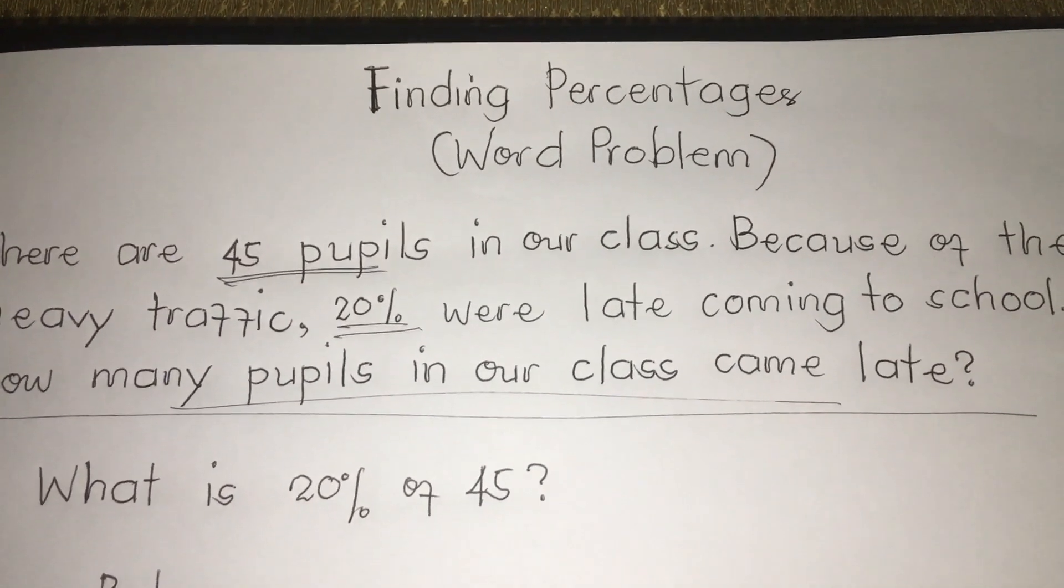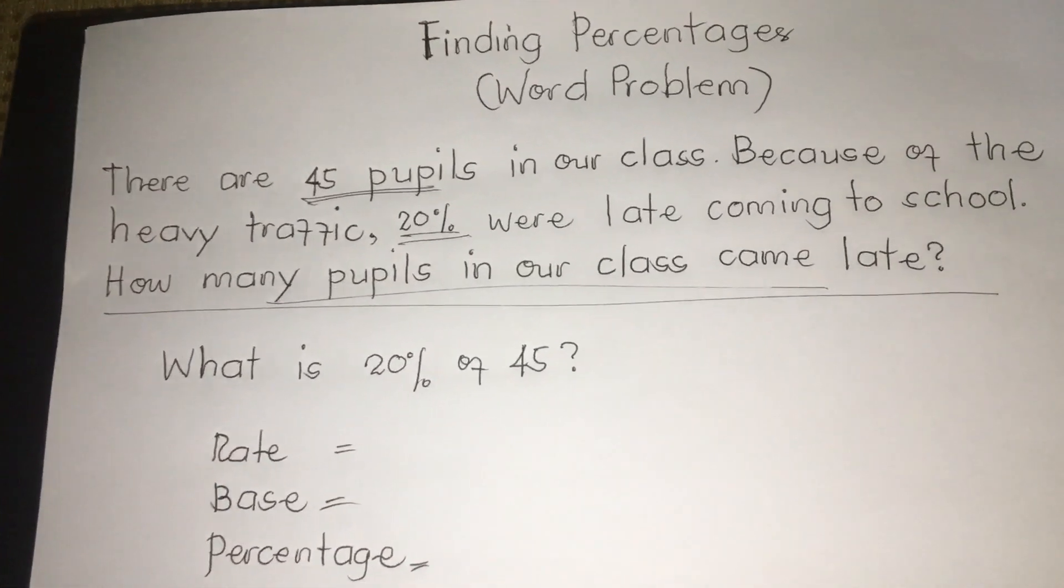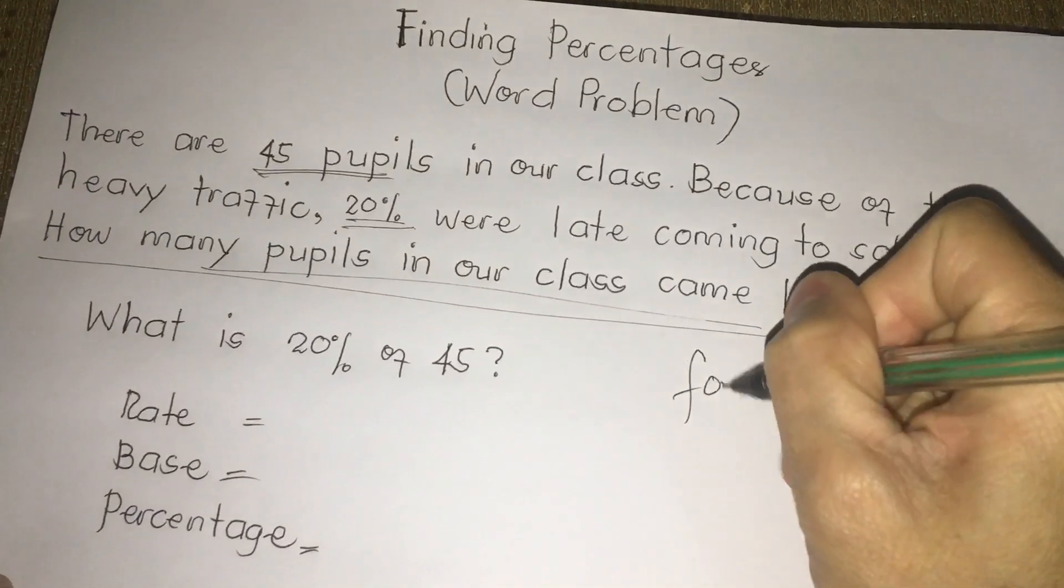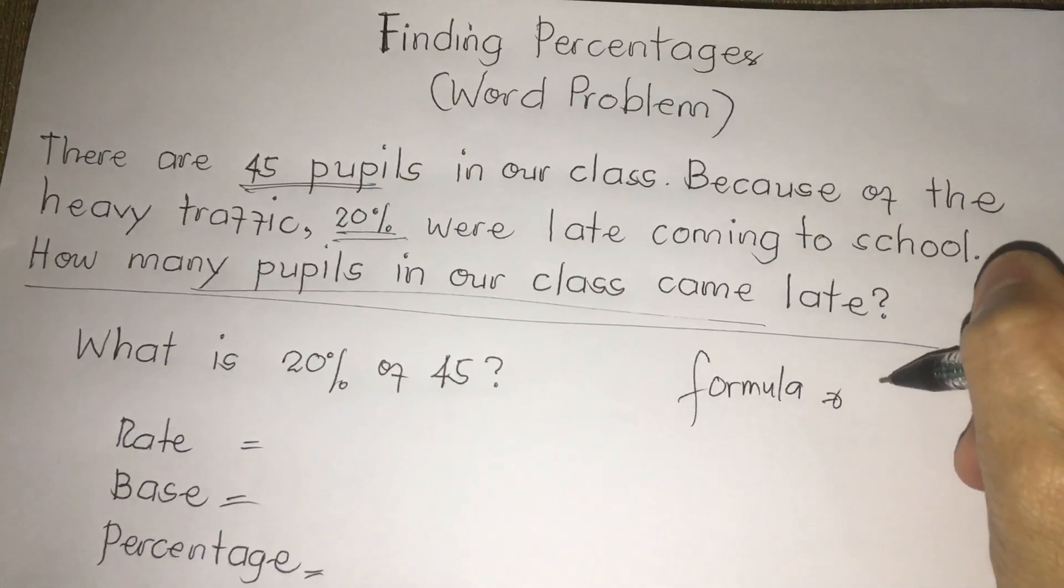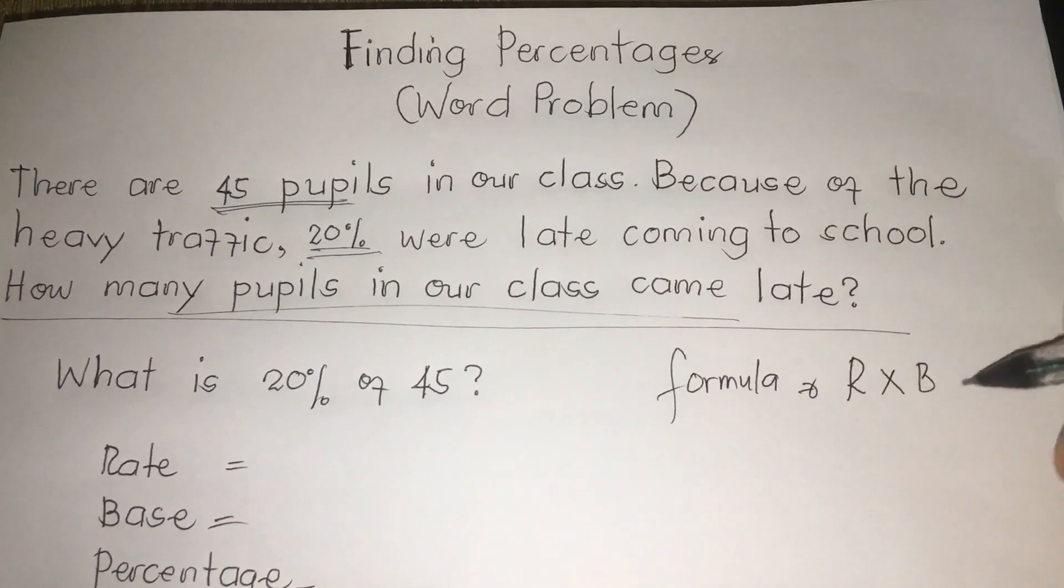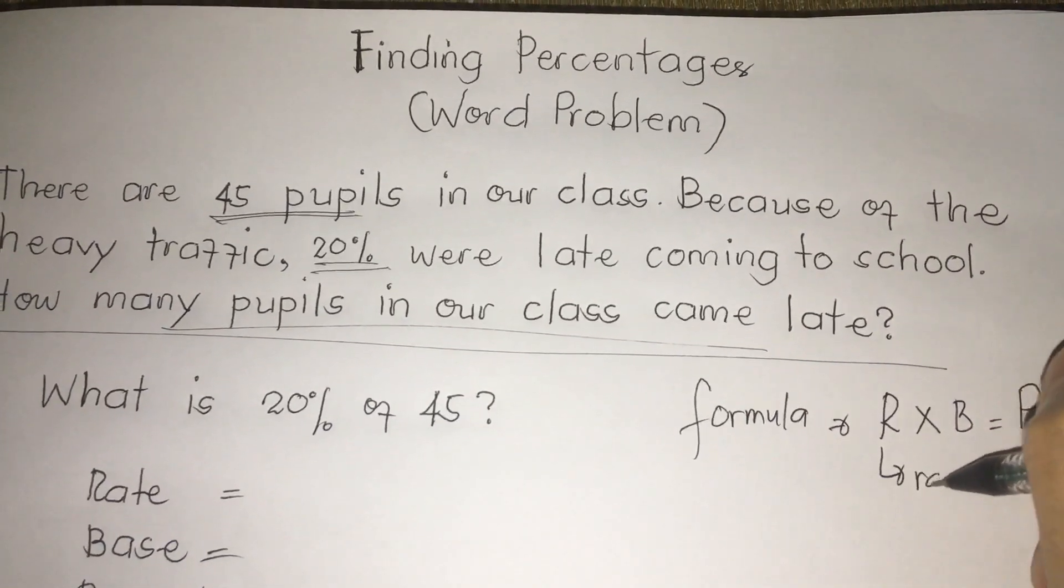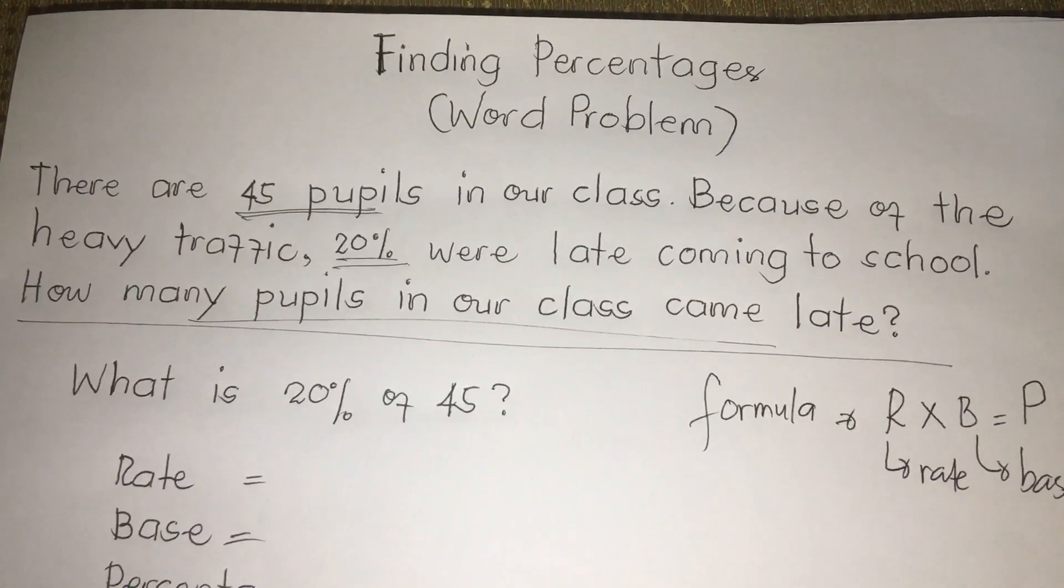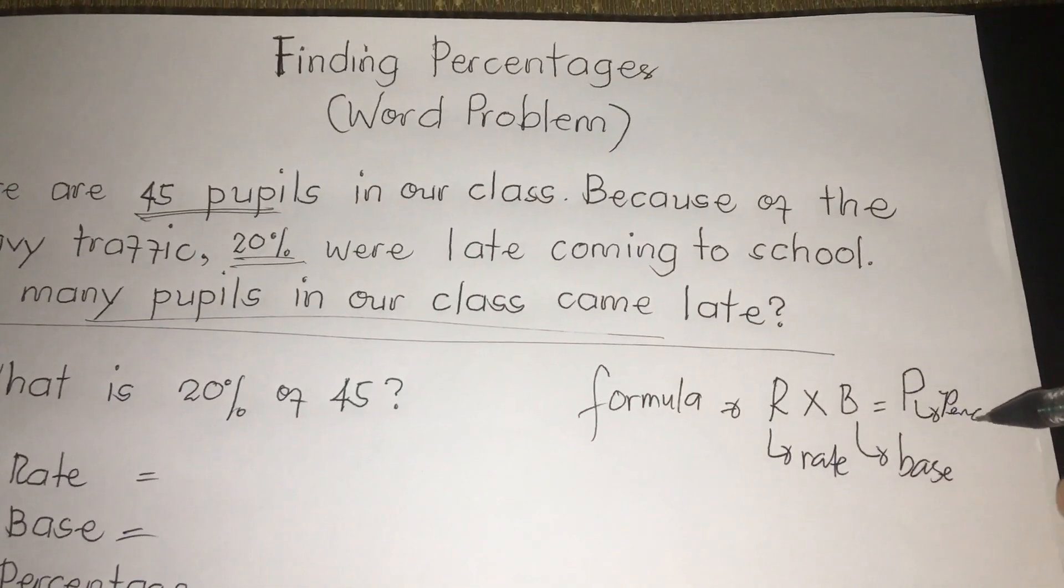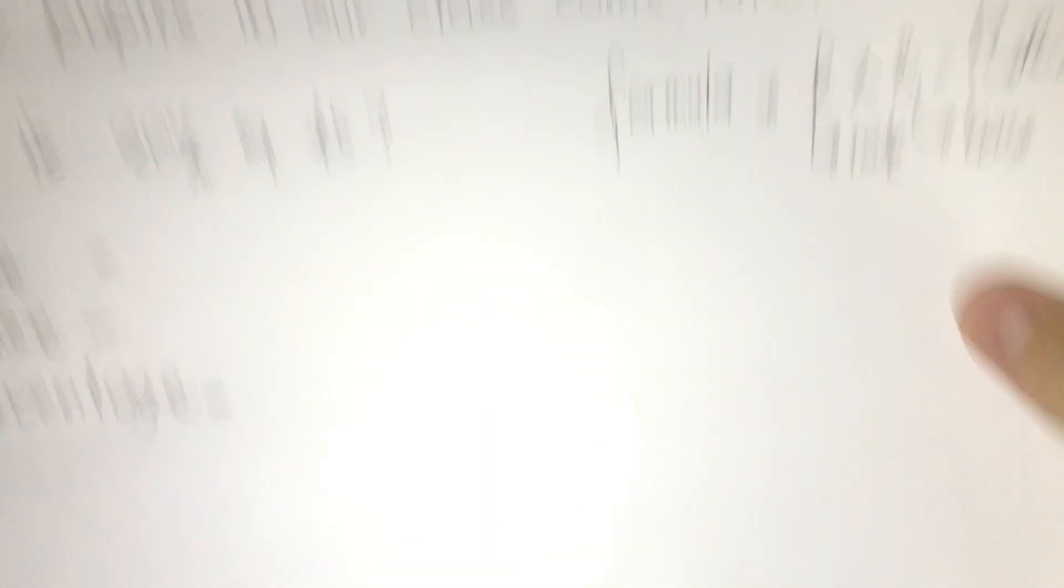So now we are going to solve the percentage. We are going to use the formula. What is the formula? R times B is equal to P. R stands for rate, B stands for base, and P stands for percentage.